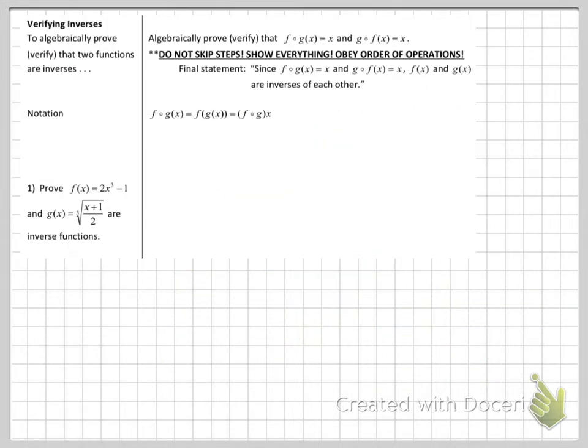Okay, if you remember finding inverses like we just did, then you probably remember what comes next is verifying inverses, proving they are inverses. Remember, in order to algebraically prove or verify that they are inverses, you have to do f of g of x and g of f of x. You have to do both. And do not skip steps. Show everything and obey order of operations. And then remember that sentence you had to write at the end of every proof. Since f of g of x and equals x and g of f of x equals x, they are inverses. So there's a lot of different ways you can write that notation, by the way. So we could say f with the little circle, g of x, or we could do parentheses, f of g of x, or we could do f of g of x in parentheses and then the x afterwards. But this is why it's sometimes called fog and goff because the little o thing looks like an o.